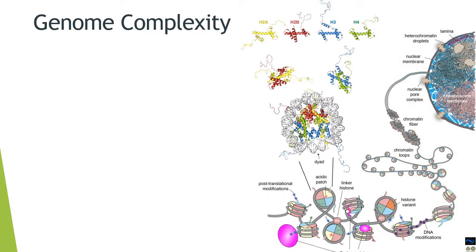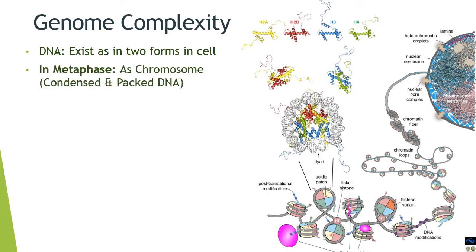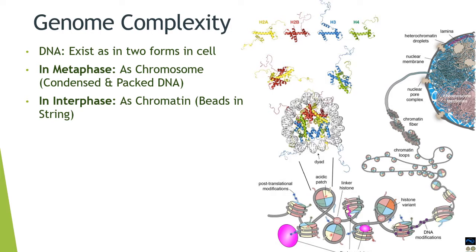As you already know from the previous lectures, let's recapitulate what we know up till now. DNA exists in two forms in the cell: in metaphase, the DNA is compacted and condensed as chromosomes, and in interphase, which is the functional state of a cell, it is present as chromatin — the beads-on-a-string structure — associated with proteins called histones, which help in packing the DNA.